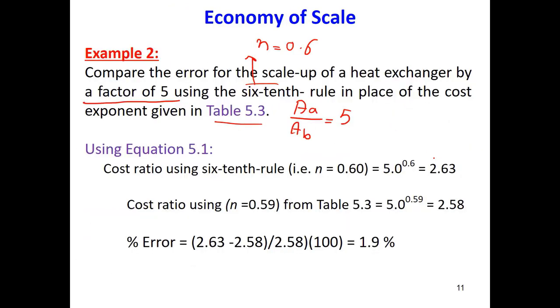So once we have to use 0.6, and once we have to use the value from the table. If I use the 0.6, and then I use this equation, the cost ratio, which means CA over CB. If I use 0.6, I have the area, the ratio of the area, power 0.6, it gives me 2.63. This is the cost ratio.